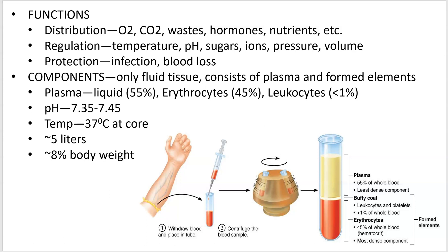What does blood do? Well, it distributes stuff. The first thing we think of it distributing is oxygen and CO2. The oxygen we absorb through our lungs, and CO2 we release through our lungs. We take the oxygen to the tissues and CO2 back from the tissues.